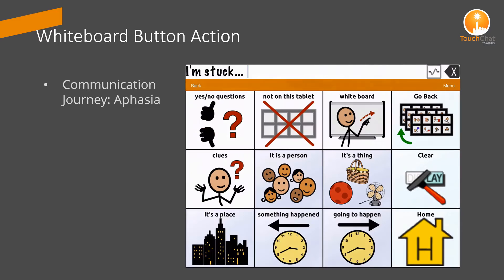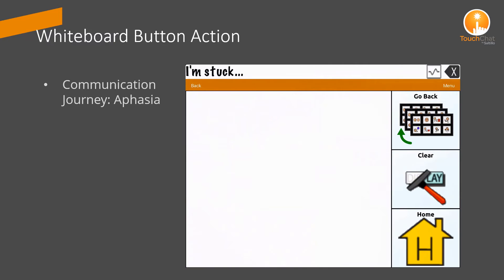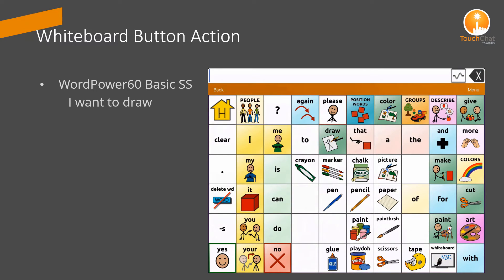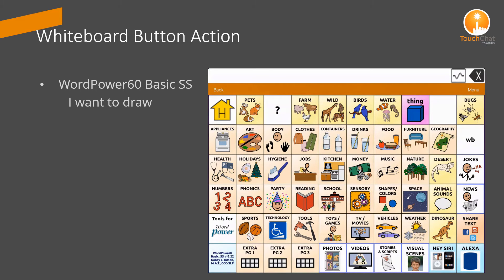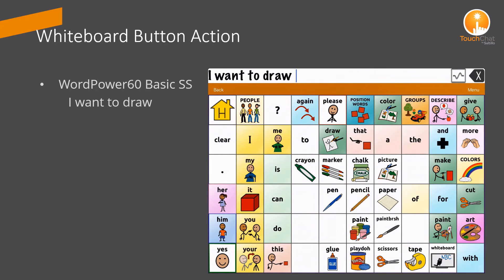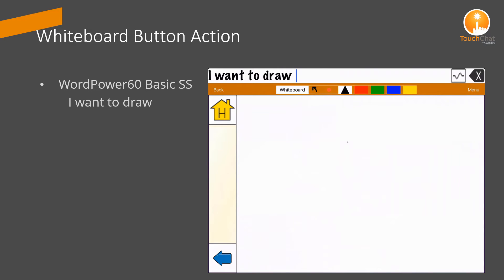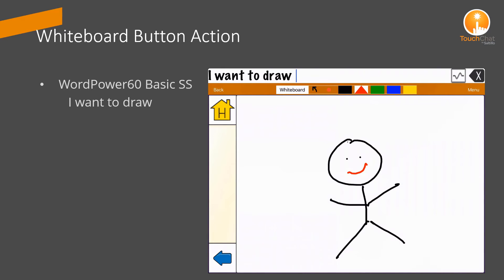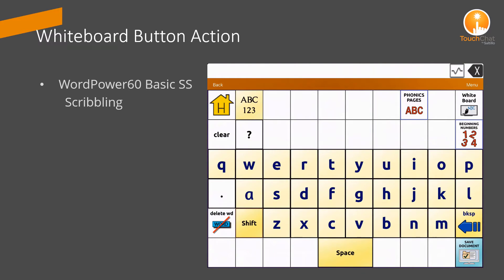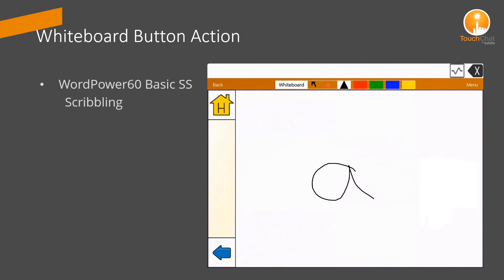Here are three examples of using a whiteboard: first in Communication Journey Aphasia, then an example of using the art page in WordPower 60 Basic, and another example of using the whiteboard as a scribbling tool added to a keyboard.